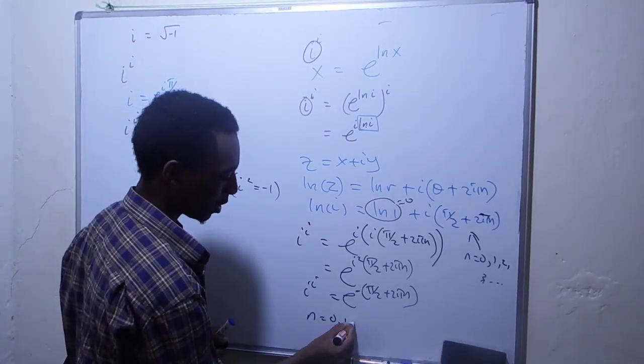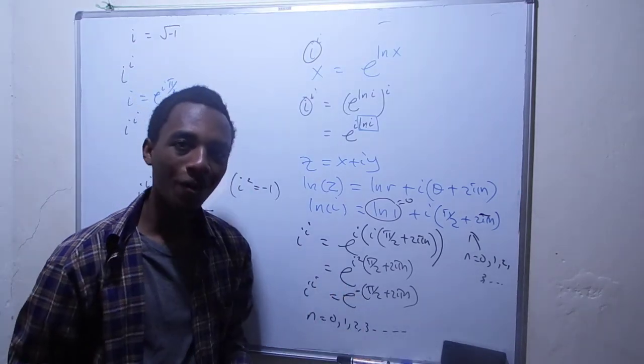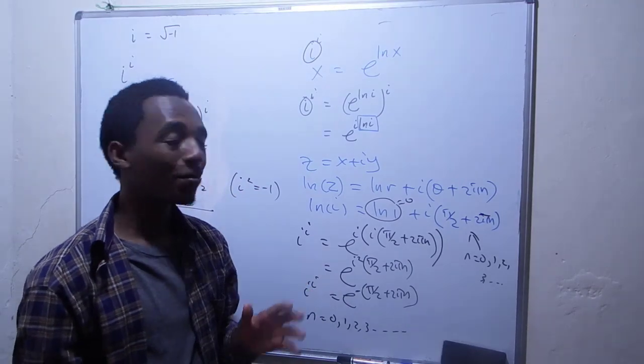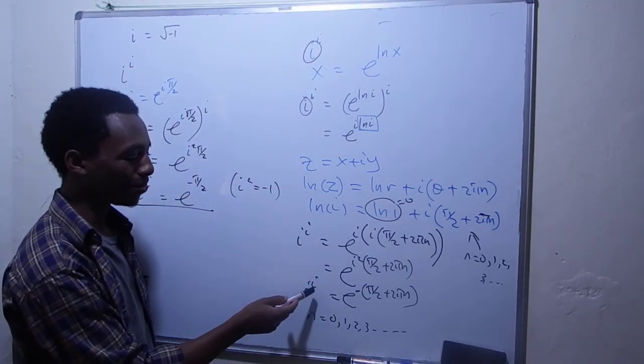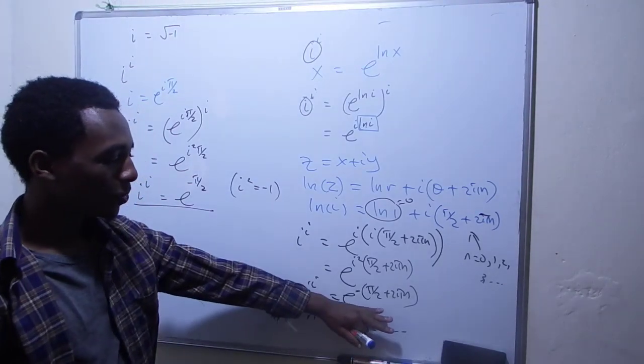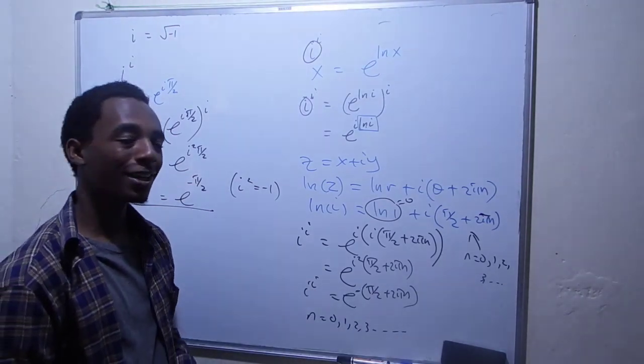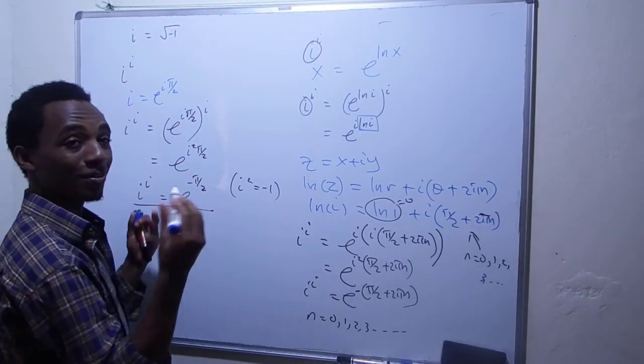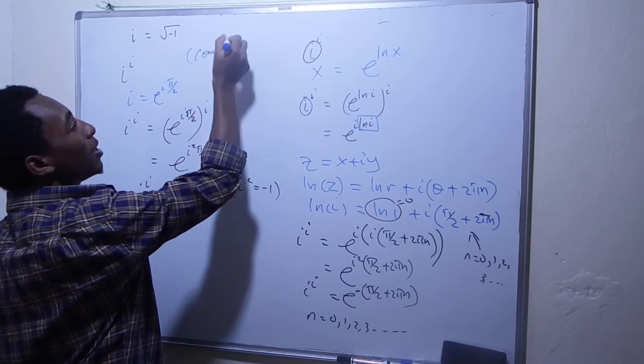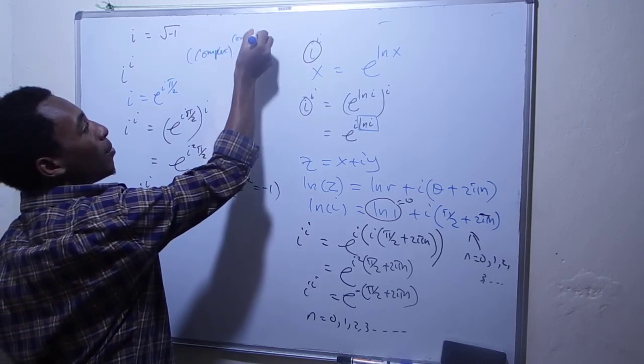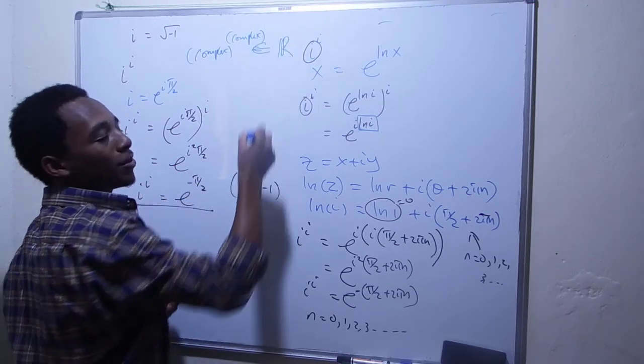So n is 0, 1, 2, 3, and so on. This is the general solution for i to the power i. Something interesting is that a complex number to the power of a complex number gives us a real number, because we don't have i anywhere in the result. This is a very interesting result.